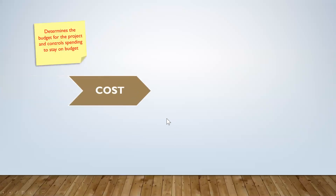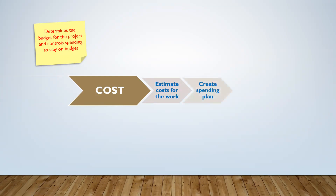Cost management determines the budget for the project and controls spending to stay on budget. To manage cost, the project manager must estimate costs for the work and create a spending plan, which can then be monitored and controlled.